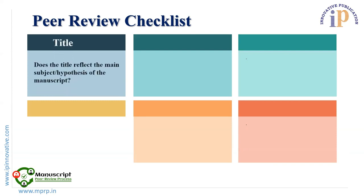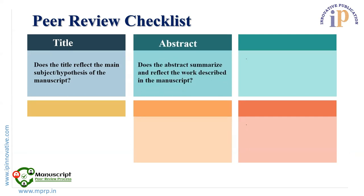Title: Does the title reflect the main subject or hypothesis of the manuscript? Is the title complete? Abstract: Does the abstract summarize and reflect the work described in the manuscript? As IP Innovative follows a structured abstract for original research articles, it is important to check whether the abstract fits properly under the whole paper.